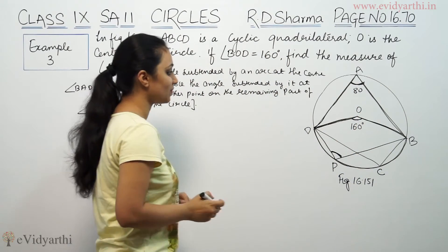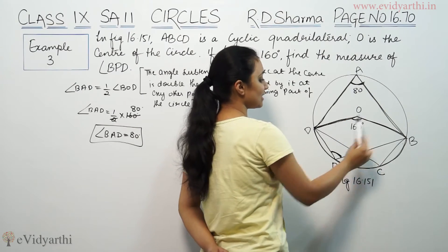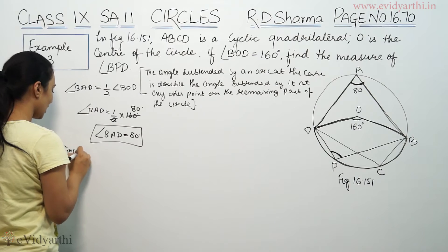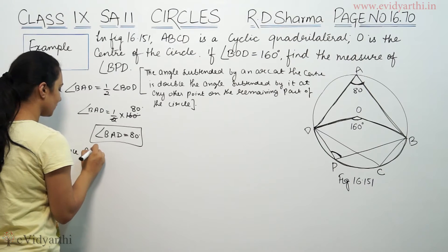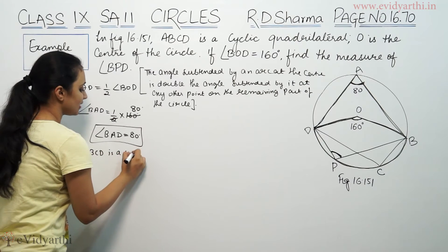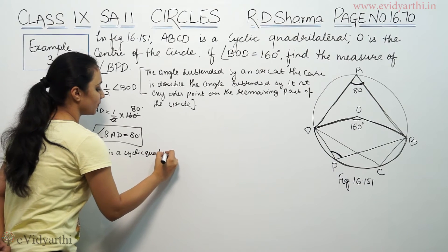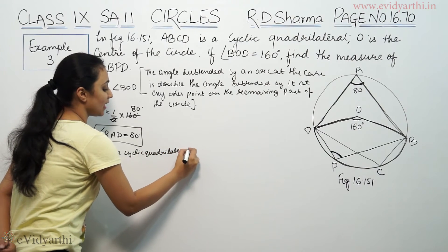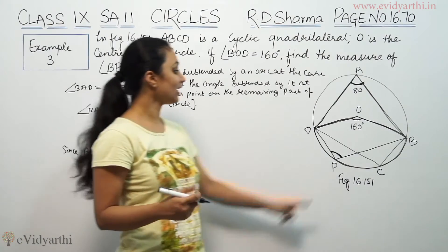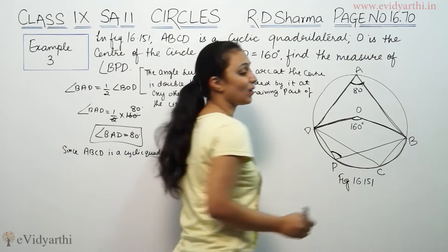Now since BAD is 80 degrees, and ABCD is a cyclic quadrilateral, the opposite angles sum to 180 degrees. So angle A plus angle C will be 180 degrees.